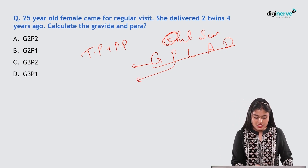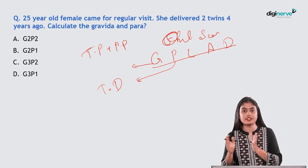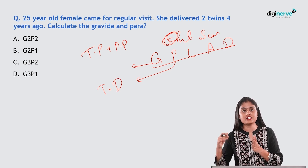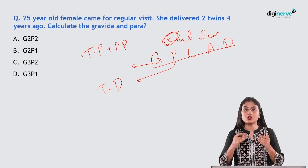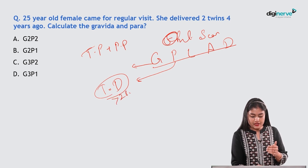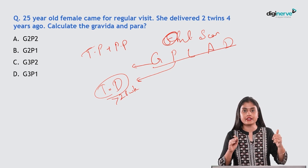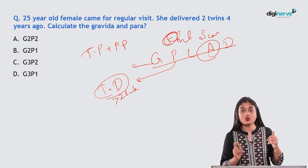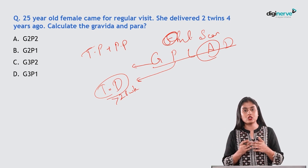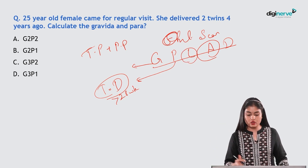Para is the total number of deliveries which have crossed the period of viability. A delivery at 20 weeks falls under abortion since it hasn't crossed viability. A delivery at 32 weeks counts as para because 32 weeks has crossed the period of viability. If the child is doing well post-delivery, it is counted as living; if not, it is dead.